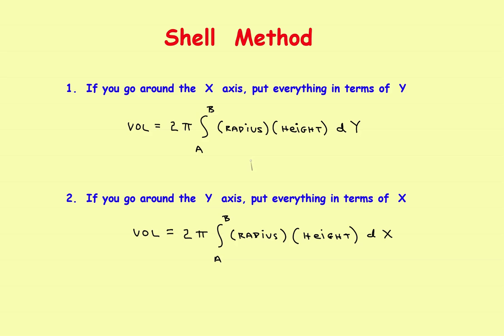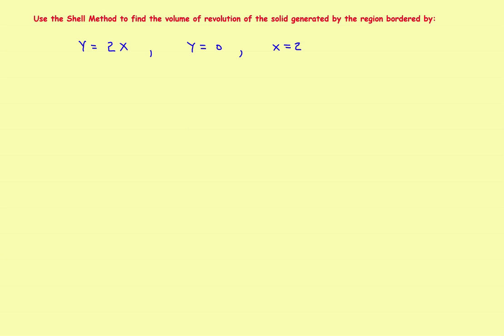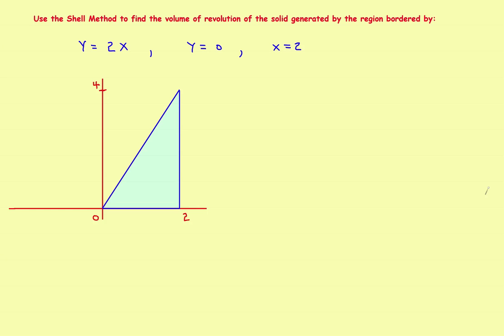In the second example, we'll do a horizontal one. The first example: use the shell method to find the volume of revolution of the solid generated by the region bordered by y equals 2x, y equals 0, and x equals 2. If you were to graph these lines, y equals 2x is the slanted line, x equals 2 is the vertical line, and y equals 0 is the horizontal line along the x-axis.